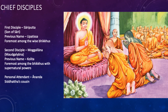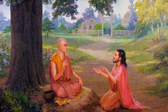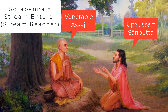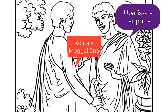Venerable Assaji recited one stanza, and having heard only the first two lines of the stanza, Venerable Upatissa attained the first state of sainthood — what we call Sotapanna, or Stream Enterer. He was very happy. This is a confirmation of his spiritual truth, the realization of final liberation. Sotapanna means Stream Reacher — entering the stream — so your spiritual journey will end up at the final destination, the ocean, the liberation, the Nibbana or Nirvana.